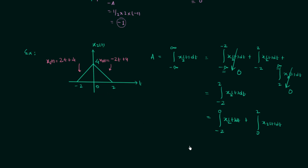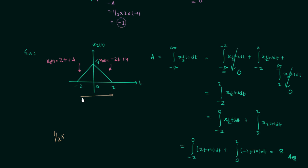Putting these values into the integration — from minus 2 to 0 the signal is 2t plus 4, and from 0 to 2 the signal is minus 2t plus 4 — and performing the integration gives the answer equal to 8. We can cross-check using the formula for the area of a triangle: half base into altitude. The base is 4 (from minus 2 to 2) and the altitude is 4, giving area equal to 8, which matches.